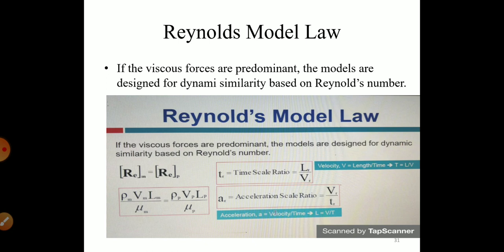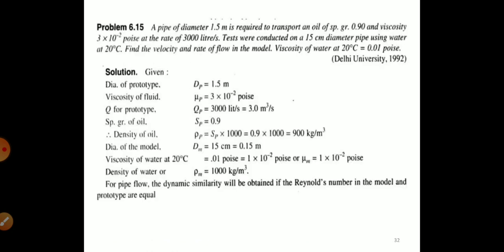For Reynolds model law, the time scale ratio is Tr = Lr/Vr, and the acceleration scale ratio is Ar = Vr/Tr. Since acceleration equals velocity divided by time, L = V/T, and velocity equals length divided by time, so T = L/V.